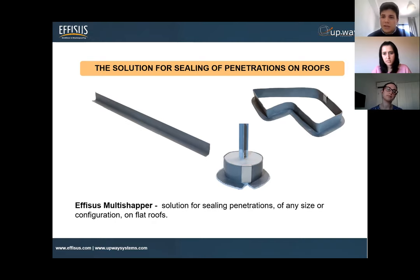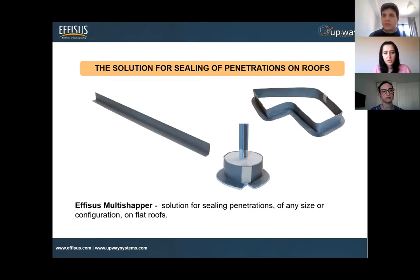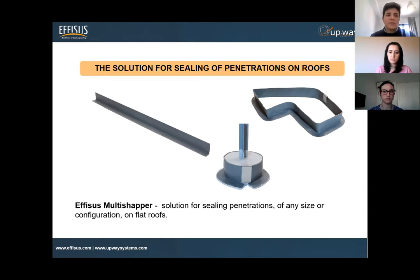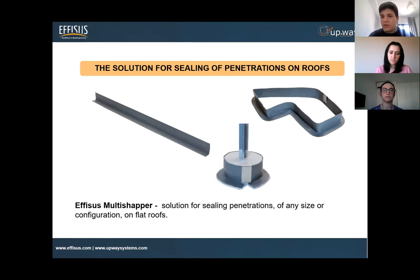Inside the Fish Stopper solution we have different solutions that address any type of penetration in roofs and facades, but specifically today we're talking about the Multi Shaper. This is a new solution we started developing last year with a lot of studies and compatibility testing. We wanted a different solution from the rigid curbs seen in the market, where you need a specific curb for a specific penetration and a specific diameter. With the Multi Shaper, the most advantageous thing is you can mold it to any type of situation — you're not stuck with a single solution.